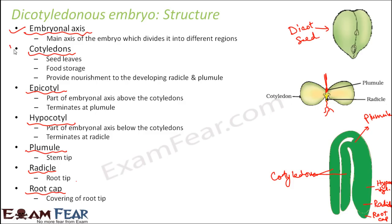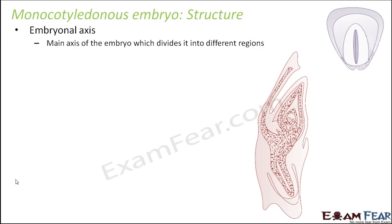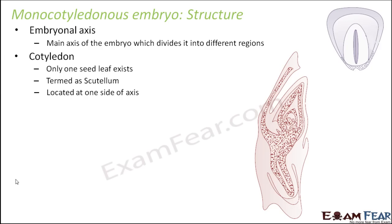Now let us quickly look at the monocot embryo and how it differs from the dicot embryo. The monocot embryo also has an embryonal axis, but the key difference is that it has only one cotyledon instead of two. This single cotyledon is also known as the scutellum.